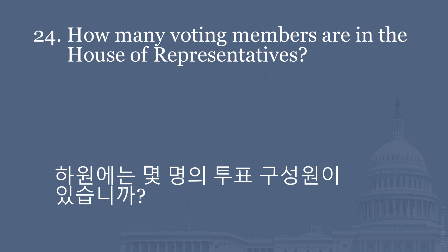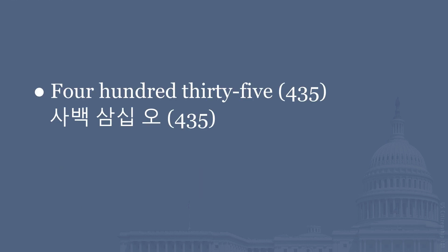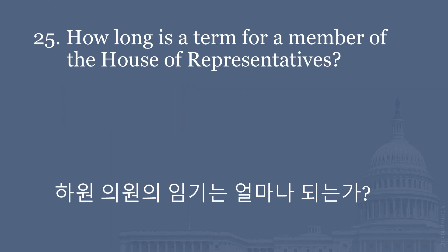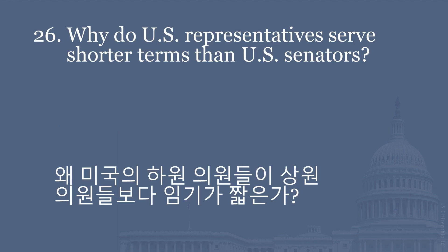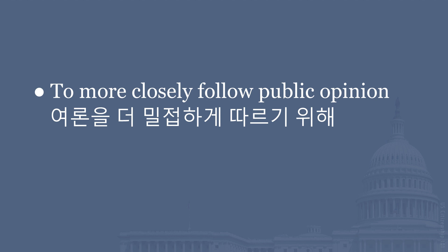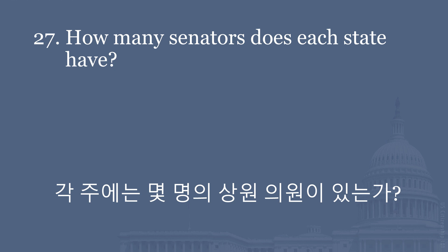How many voting members are in the House of Representatives? 435. How long is a term for a member of the House of Representatives? Two years. Why do U.S. Representatives serve shorter terms than U.S. Senators? To more closely follow public opinion.